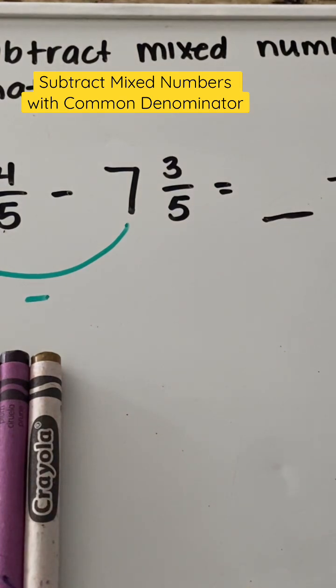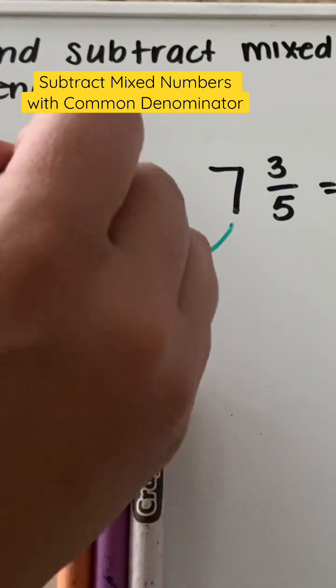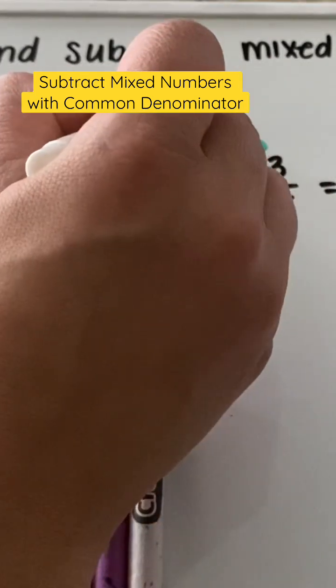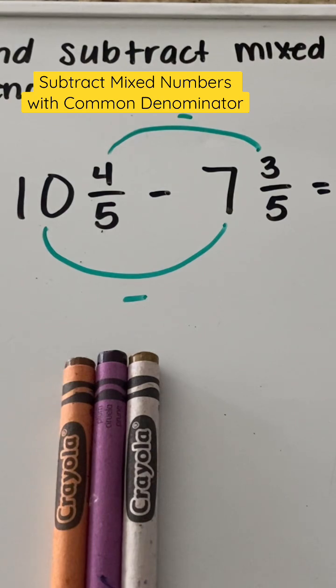So 10 minus seven is three. Then we're going to take our numerators on top. So our four and our three, and we're going to subtract those. What is four minus three?